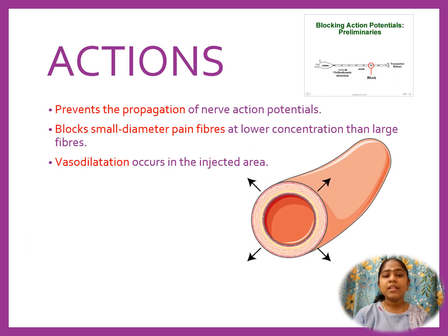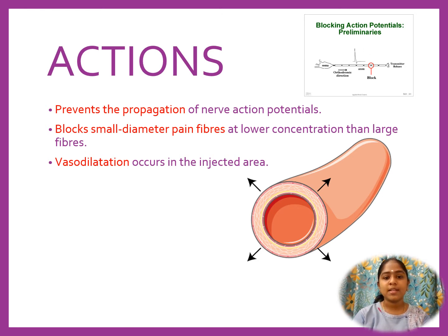Actions: Lignocaine prevents the propagation of nerve action potentials. It blocks small diameter pain fibers at lower concentrations than large fibers. Vasodilation occurs in the injected area.